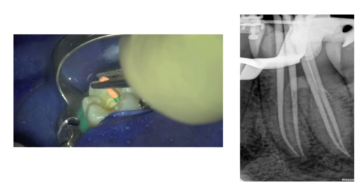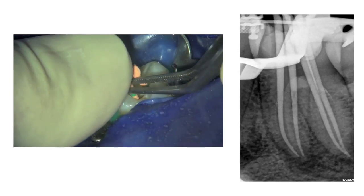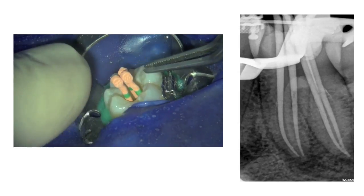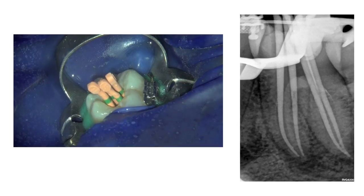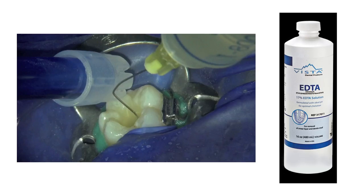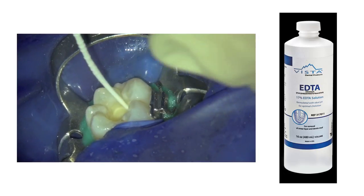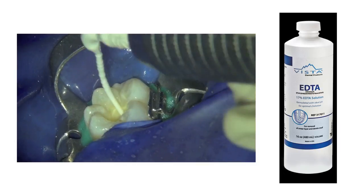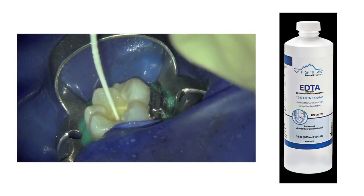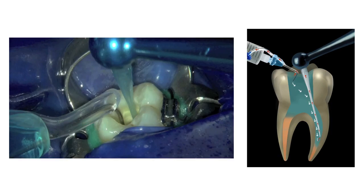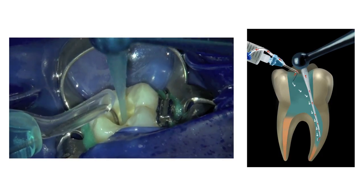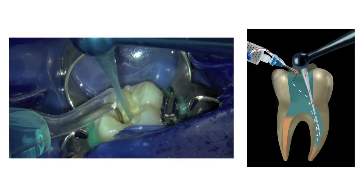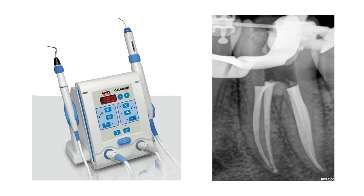After root canal preparation, four size medium WaveOne Gold gutta-percha points were fitted into the prepared root canals and the fit of the cones was verified radiographically. The canals were filled with 17% EDTA and the solution was activated with the EDDY irrigation device from VDW for approximately 2 minutes to remove the smear layer. This was followed by a final irrigation step using heated 3.5% sodium hypochlorite in the EndoVac system. After irrigation, the canals were obturated with the gutta-percha points and pulp canal sealer using the Calamus dual obturation unit in a continuous wave of condensation mode.